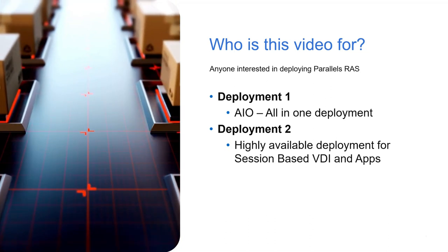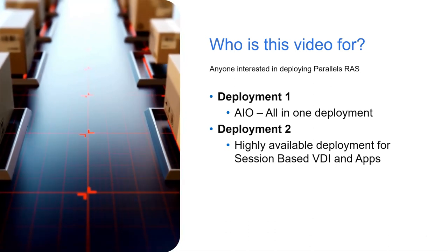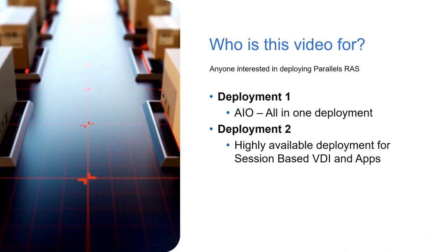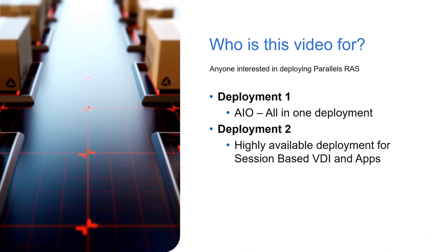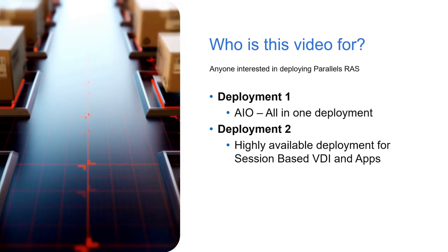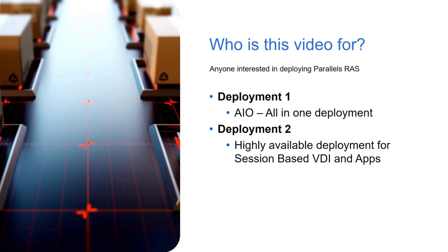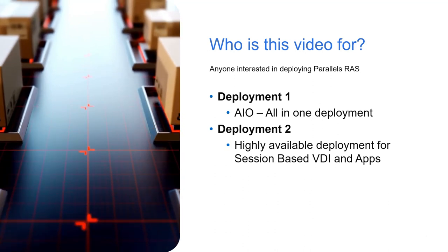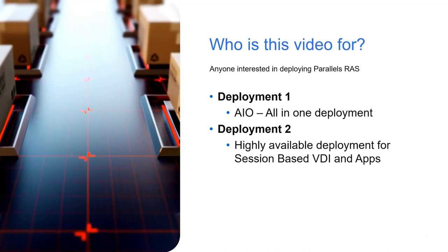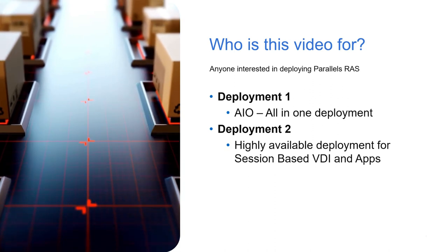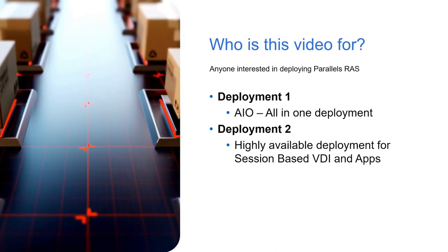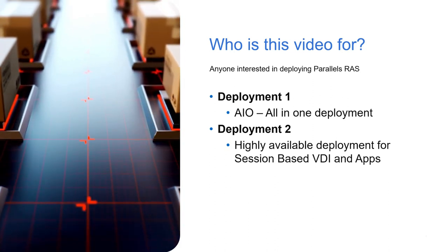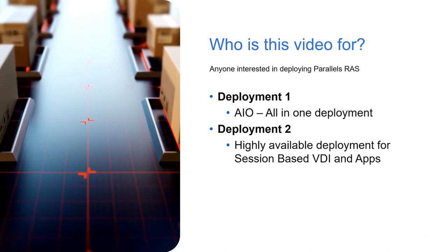The second deployment expands things out by adding an additional server. That server will have a gateway, the connection broker, and the session host role, allowing us to go highly available. We'll place an additional component called the HALB in front of that. The first half of the video gets you up and running; the second is the HA expansion, which many customers use as a production environment.